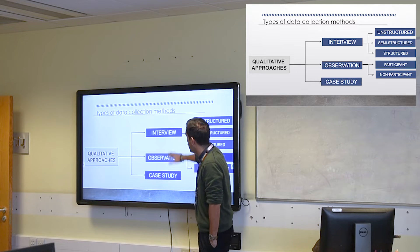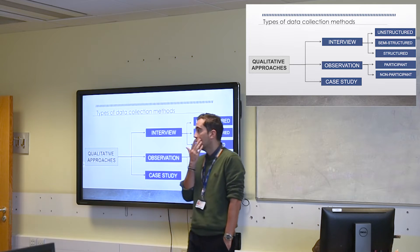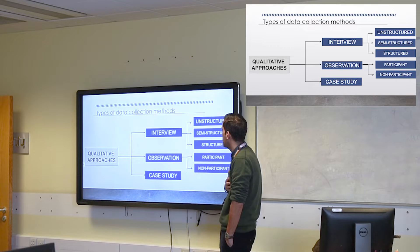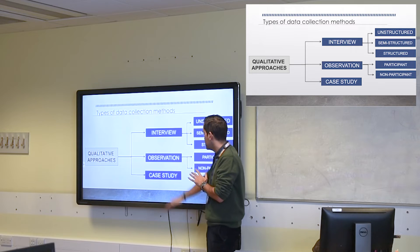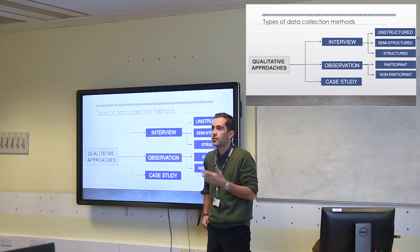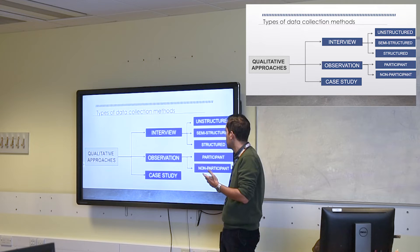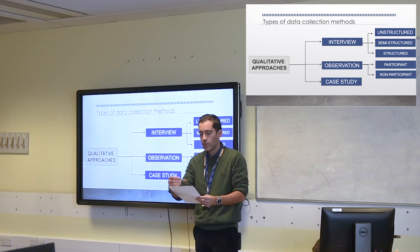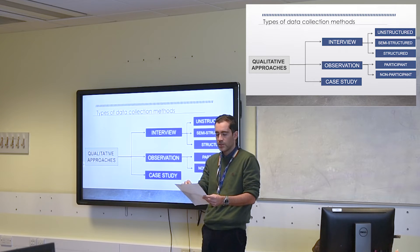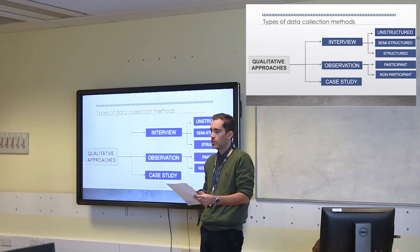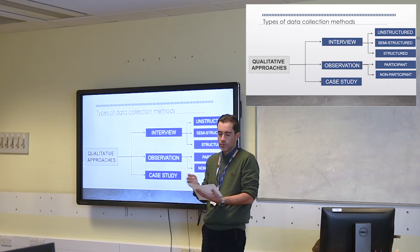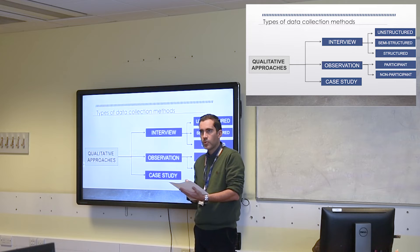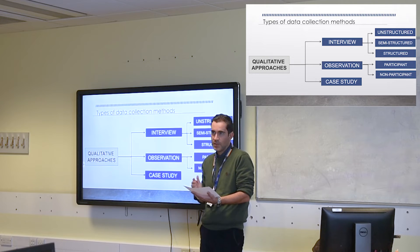There are three methods listed here, but two are most likely relevant to your research. One is observations — a fairly simple method. In the library example, an observation could involve going in with an observation sheet and noting two or three things, such as observing two or three people: are they looking at a book, sitting down, talking to colleagues?